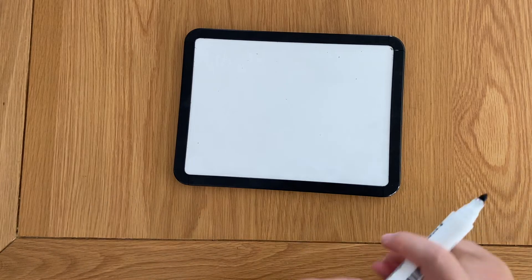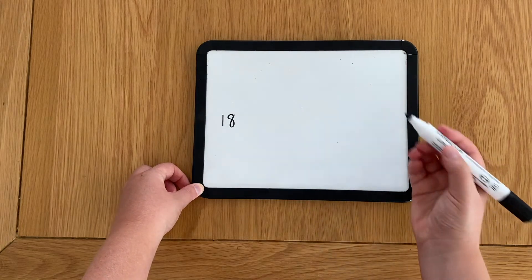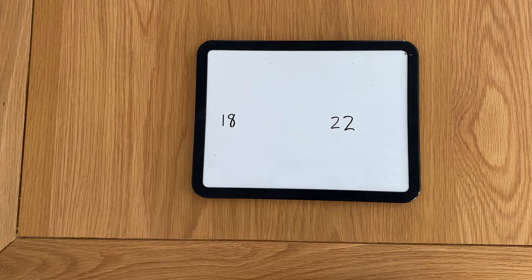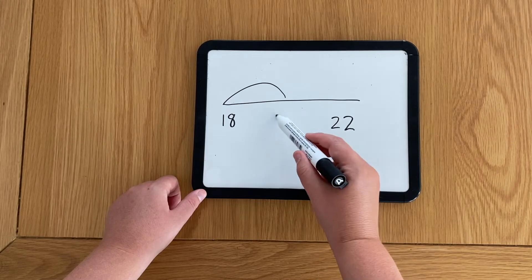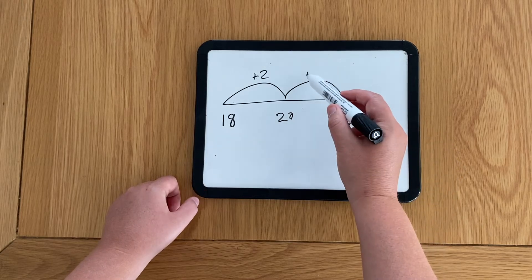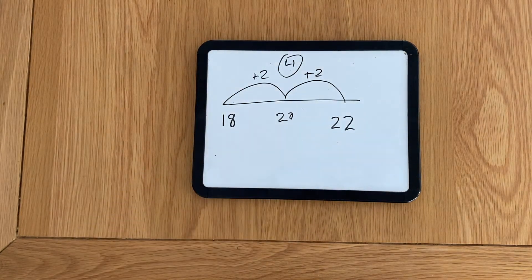And then of course the students are going to want to know whose number was the closest but what I want to talk about is what was the difference between the closest estimate and the actual quantity. And to do that I like to use a number line. So what I would do is I would say the closest estimate was 18 in our collection but the actual number was 22. So what is the difference between these two numbers? So then you use the number line however you like so you can jump to 20 and say that was plus 2 and then we jump to 22 and that was another plus 2. So the difference between the closest estimate 18 and 22 was 4.